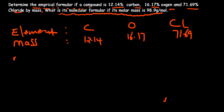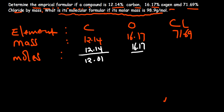The next thing is to find the moles. How do we find these moles? We are going to divide these percentage masses by the molar mass of each element. The molar mass of carbon is 12.01, so we say 12.14 divided by 12.01. Then 16.17 divided by the molar mass of oxygen, which is 16. Then 71.69 divided by the molar mass of chlorine, which is approximately 35.45 — you check the periodic table.